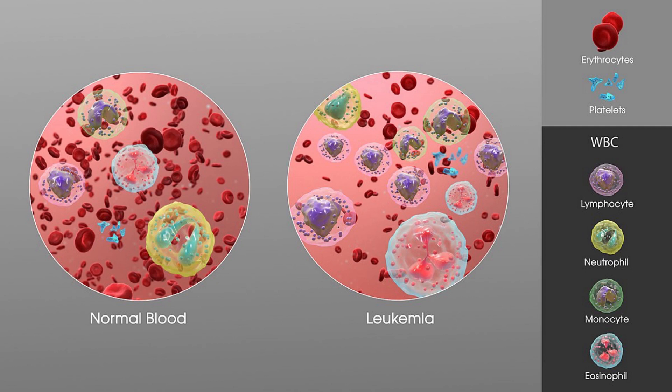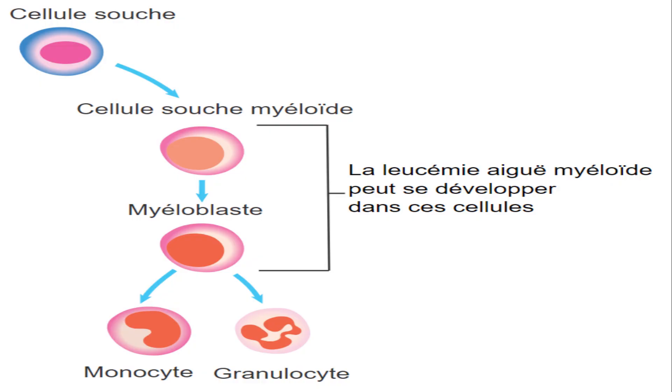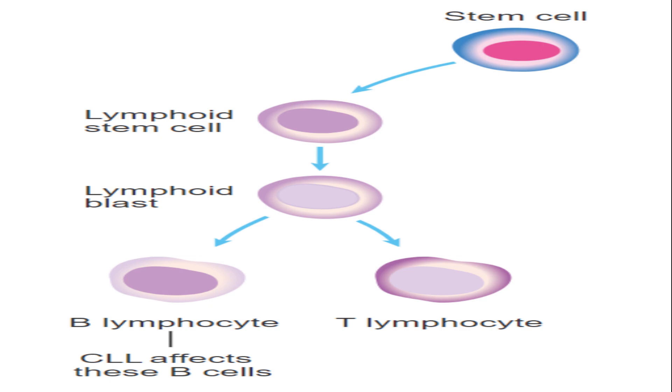In leukemia, the bone marrow produces abnormal white blood cells, known as leukemic cells, which do not function properly. Leukemia is classified into different types based on the speed of progression and the type of white blood cells affected. Acute lymphoblastic leukemia primarily affects lymphocytes and progresses rapidly if left untreated. Chronic lymphocytic leukemia affects mature lymphocytes and tends to progress slowly over time.